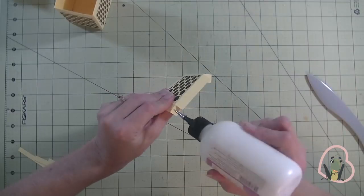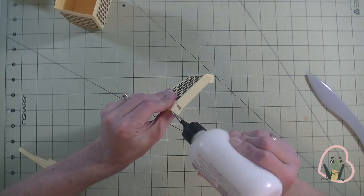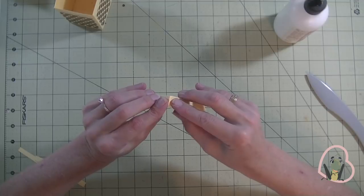Now the lid. Really simple. Just put glue on the flaps. Bring the flaps over.